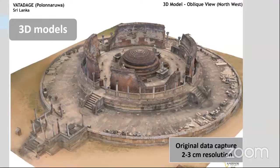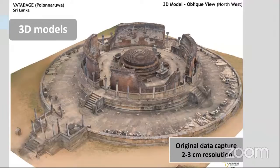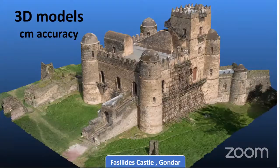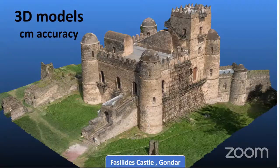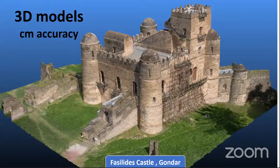This is an example of a 3D model. When I talk about resolution, that is the distance between points. These models are comprised of millions — sometimes billions — of points, and the points on the surface are two to three centimeters apart; that is the resolution we typically use. This is the Vatadage in Polonarua. Please bear with me if I don't pronounce the Sri Lankan names correctly. This other model is in Africa, in Gondar. Again, the resolution is two to three centimeters, and the accuracy is also in the centimeter order. You can measure wall thickness, window size, door size — whatever is needed — and you can walk through the model.